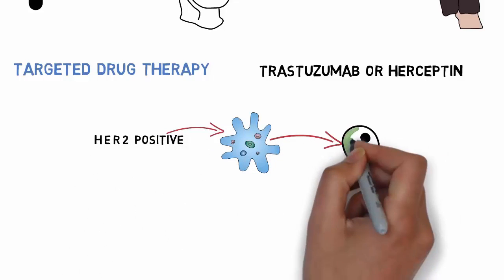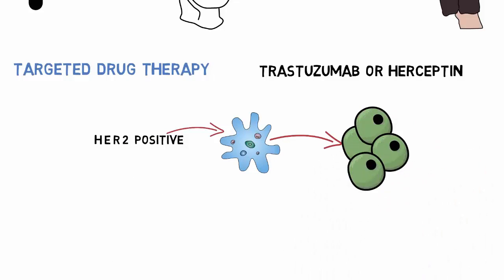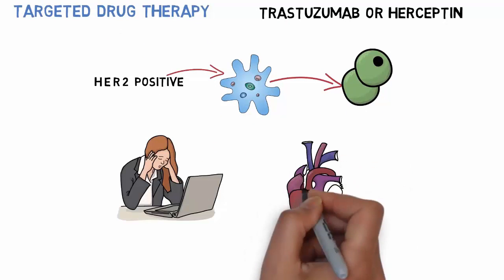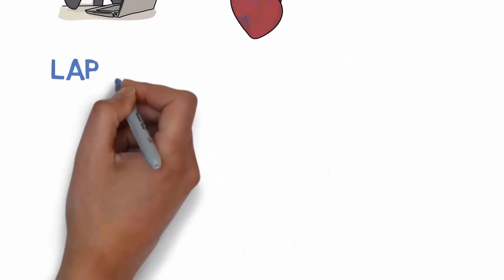Herceptin targets this HER2 protein, and by doing so reduces tumor growth. Side effects may include headaches and heart damage.